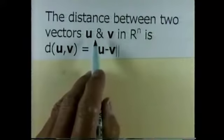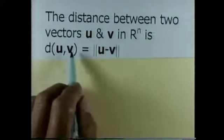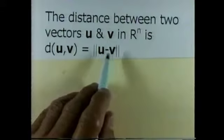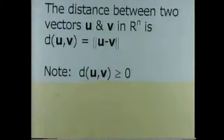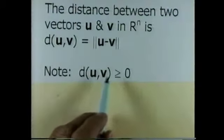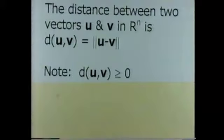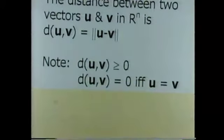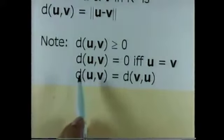The distance between two vectors u and v in n-space is denoted by d(u, v) and is defined to be the magnitude of u minus v. By definition of magnitude, the distance between u and v is greater than or equal to zero, because the magnitude is a square root, which is always positive or zero. The distance equals zero if and only if u equals v, and the distance from u to v equals the distance from v to u.